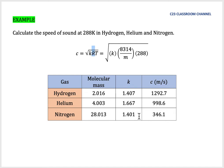It is advantageous for you to know these numbers. If we substitute the value of k for hydrogen and the molecular mass for hydrogen, we get that speed of sound in hydrogen is 1,292.7 m/s.